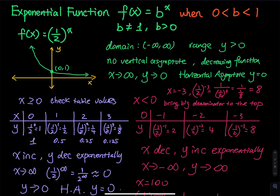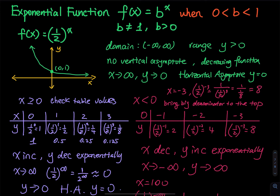Looking at the table of values for x ≥ 0: when x = 0, (1/2)^0 = 1; when x = 1, (1/2)^1 = 1/2; when x = 2, (1/2)(1/2) = 1/4; when x = 3, (1/2) multiplied by itself three times equals 1/8. In decimal form that is 1, 0.5, 0.25, and 0.125.